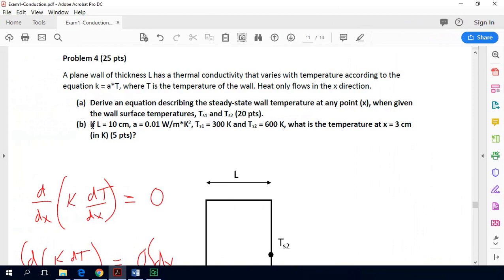So now to solve part B, now it's just a matter of kind of checking our equation to make sure we get a number that makes sense. If Ts1, I'll go ahead and read this part B since I haven't yet. If L equals 10 centimeters, A is equal to 0.01, Ts1 is 300 and Ts2 is 600. What is the temperature at x equals 3 centimeters?